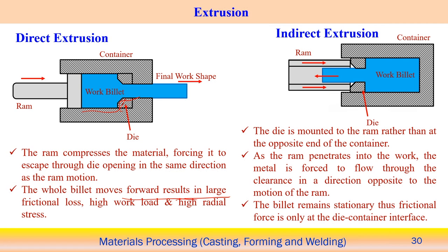In the indirect extrusion process, the work piece is placed in the container and the die is mounted on the RAM rather than the opposite end of the container. This rearrangement means the billet is more or less stationary, so frictional force acts only at the die-container interface. This is the key advantage — we can reduce the frictional load in indirect extrusion compared to direct extrusion.